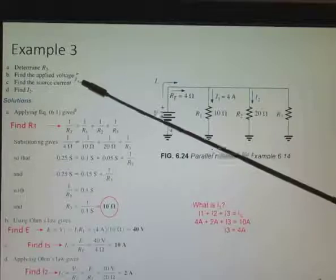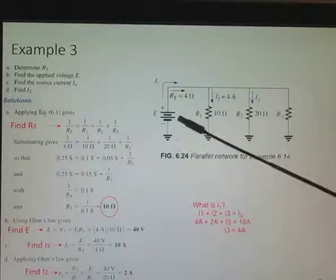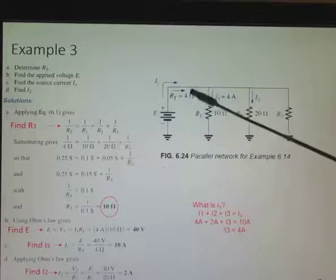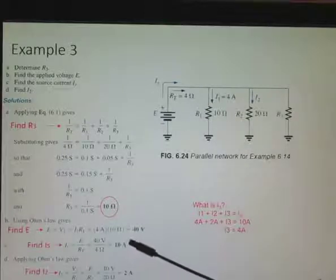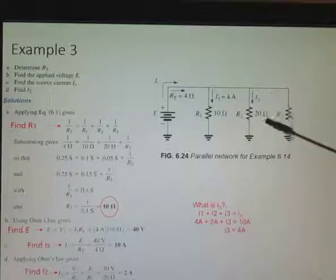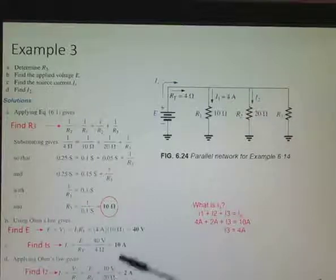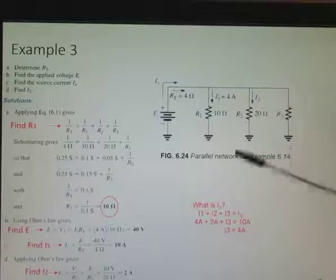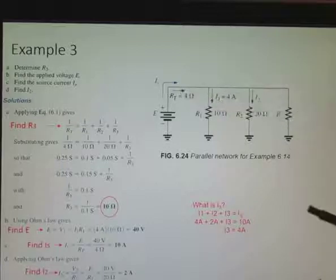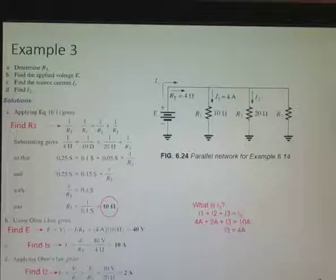To find the source current coming out of the battery, it is the total voltage, which we just found, 40 volts, divided by the total resistance. And we do know the total resistance is 4 ohms, so we get 10 amps there, volts divided by resistance. Now we want to find I2. I2 is simply the voltage divided by 20: 40 volts divided by 20. What is I3? We could use that we know I1 plus I2 plus I3 equals the source current. And we plug in everything we know, except for I3, and we can solve for I3 as 4 amps.